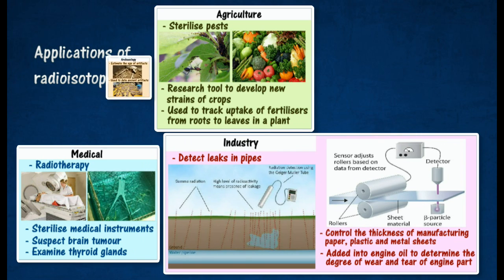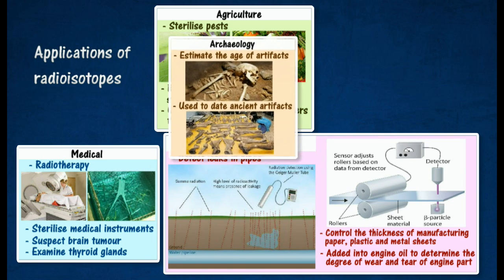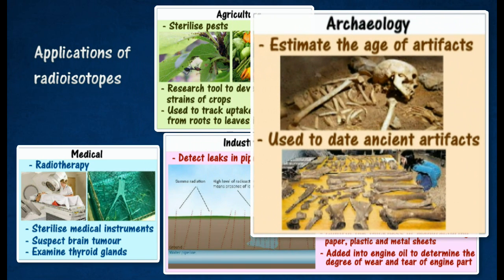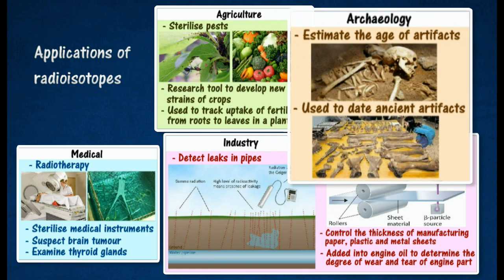All living things contain carbon-14, which will continue to emit radiation after death. The emission will gradually decrease. By measuring the activity of a sample, the age of artifacts can be estimated. Carbon dating can also be used to date ancient artifacts.